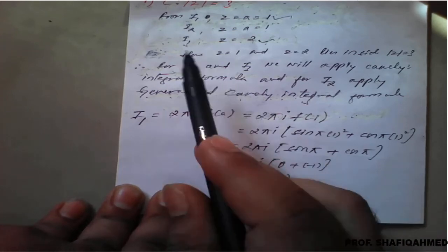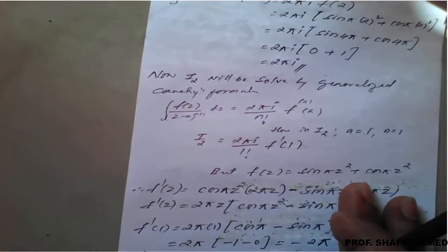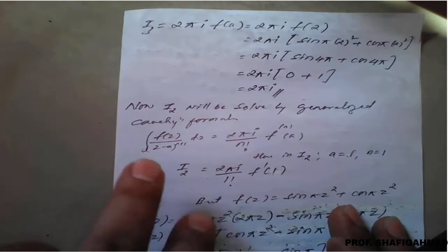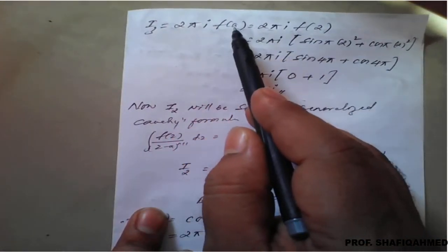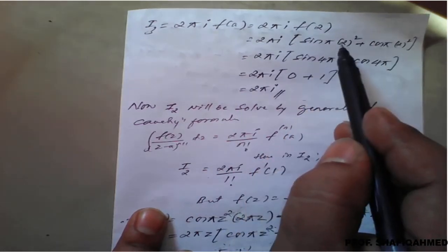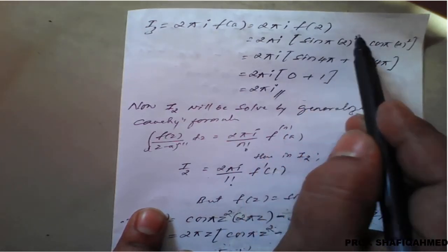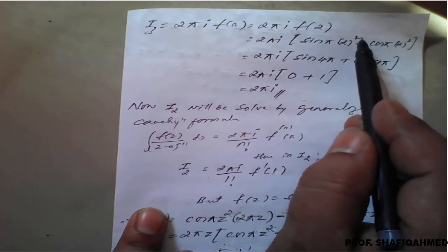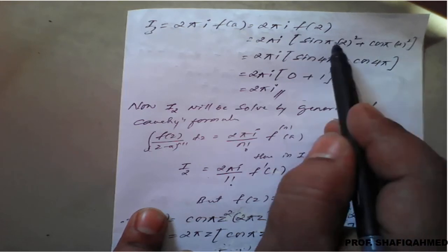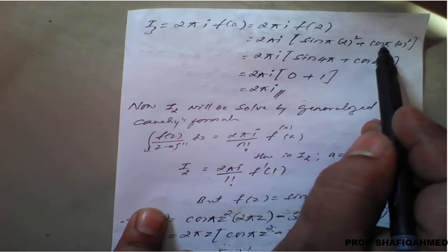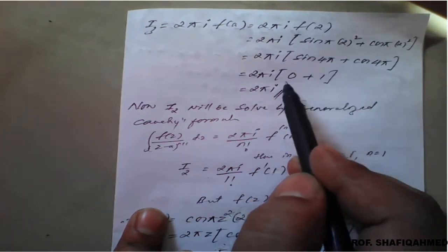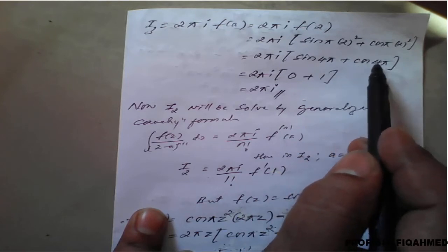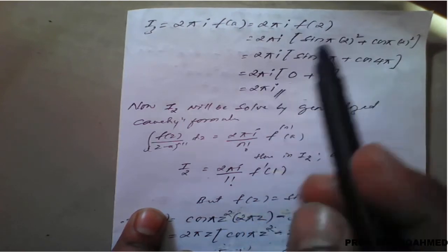Similarly for I3, applying Cauchy's integral formula with a = 2: f(2) = sin(π·2²) + cos(π·2²) = sin(4π) + cos(4π) = 0 + 1 = 1. Therefore I3 = 2πi · 1 = 2πi.